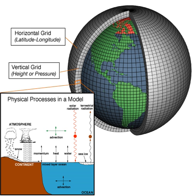Three-dimensional GCMs apply discrete equations for fluid motion and integrate these forward in time. They contain parameterizations for processes such as convection that occur on scales too small to be resolved directly. A simple general circulation model consists of a dynamic core that relates properties such as temperature to others such as pressure and velocity. Examples are programs that solve the primitive equations, given energy input and energy dissipation in the form of scale-dependent friction, so that atmospheric waves with the highest wavenumbers are most attenuated. Such models may be used to study atmospheric processes, but are not suitable for climate projections.